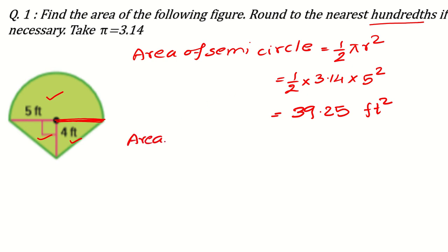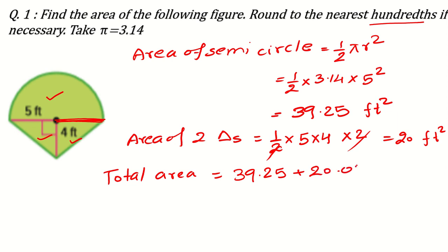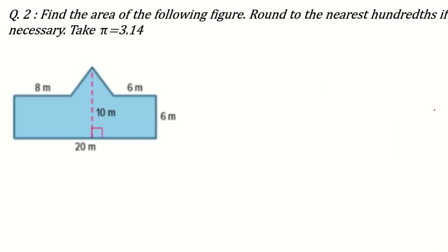Now, area of two triangles: area of one triangle is half times base times height, multiplied by 2 for both triangles. The 2s cancel out, giving us 5 times 4 = 20 feet square. So the total area equals 39.25 plus 20.00, which is 59.25 feet square. It is already to two decimal places so no rounding needed.